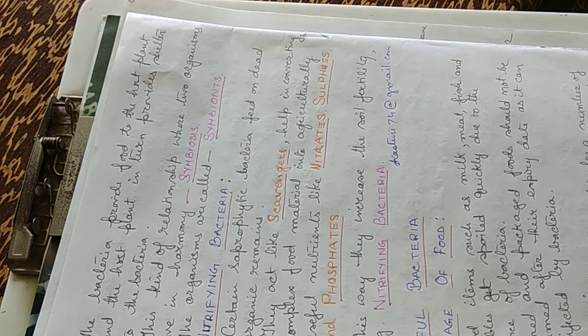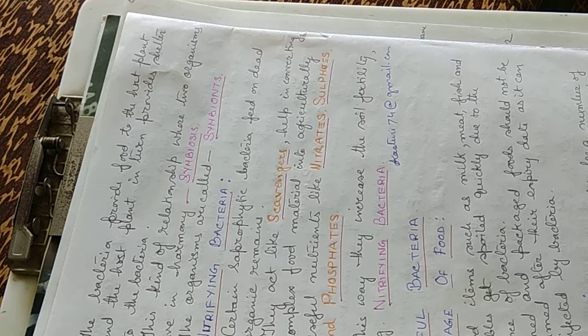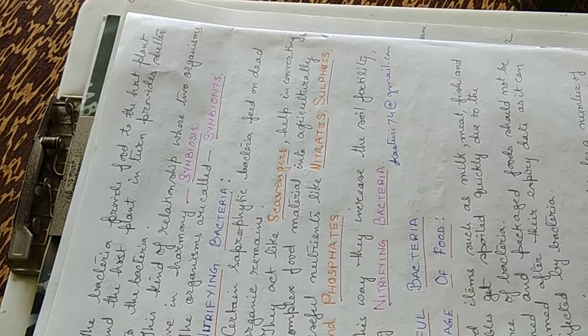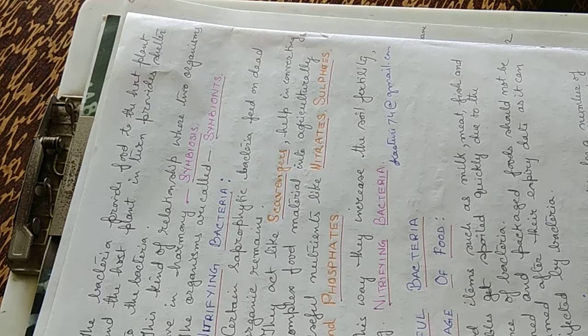Harmful bacteria spoil food items such as milk, meat, fish and vegetables which get spoiled quickly due to the presence of bacteria. Tinned and packaged foods should not be consumed after their expiry date as they can be infected by bacteria.